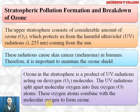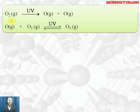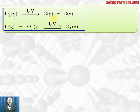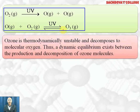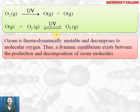Oxygen atoms combine to form molecular oxygen. Ozone decomposes to form molecular oxygen and nascent oxygen, but nascent oxygen combines together to form molecular oxygen again. In the reactions, oxygen breaks down into two nascent oxygen atoms; nascent oxygen combines with oxygen in the presence of ultraviolet light to generate ozone gas. That is how ozone gas is formed in the atmosphere. Ozone is thermodynamically unstable and decomposes to molecular oxygen, and thus a dynamic equilibrium exists between the production and decomposition of ozone molecules.